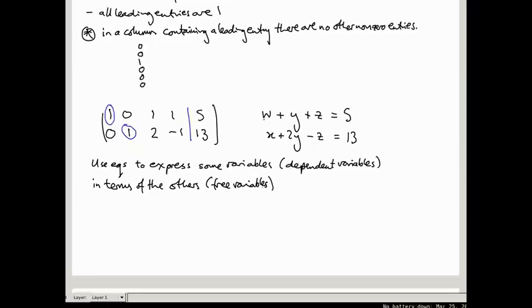Because these other variables, they can be whatever they want, and that will determine the values of the dependent variables. So, what are we going to do? We're going to have W equals 5 minus Y minus Z, from this first equation. And the second equation, we're going to have X equals 13 minus 2Y plus Z. So W and X are dependent variables, and Y and Z are free variables.